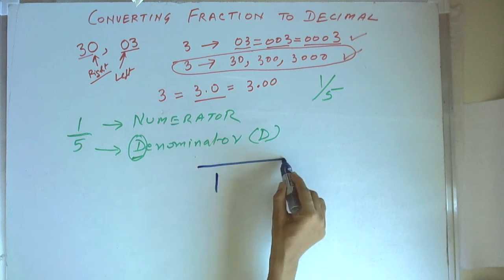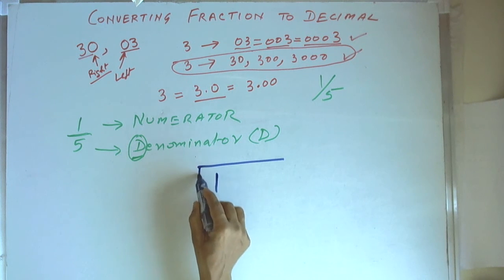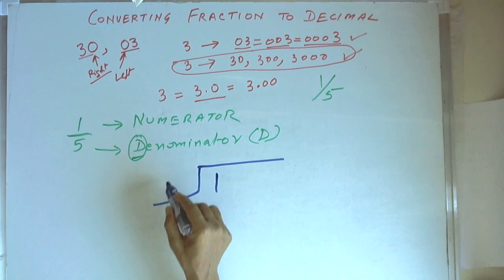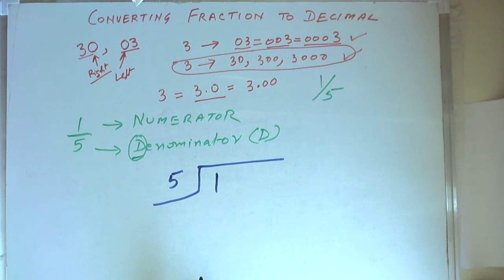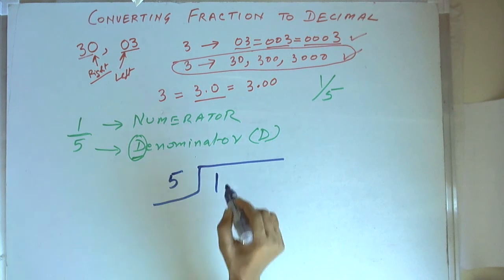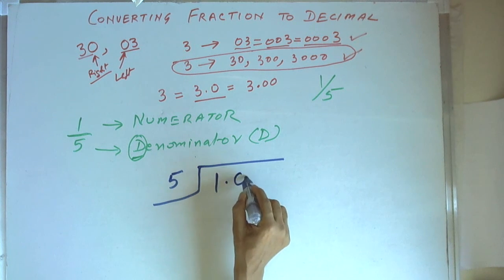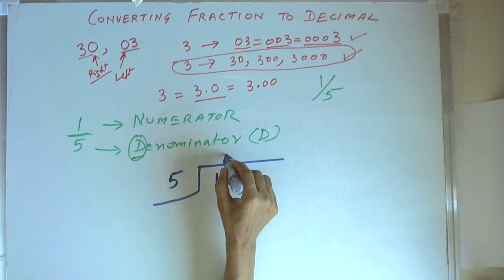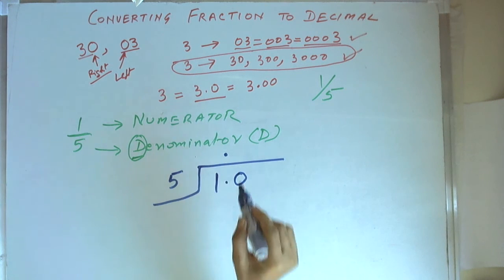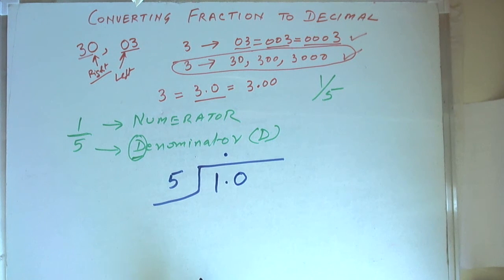It is basically by division. So what we will do is divide 1 by 5. We cannot divide 1 by 5 because 1 is less than 5. So what we do is put a decimal point here and put a 0. And therefore, we will put a decimal point here in the result because the result will be less than 1.